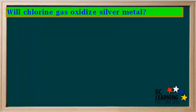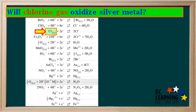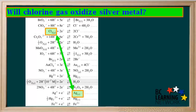Here's another question: Will chlorine gas oxidize silver metal? Chlorine gas, Cl2, is found on the left side of the table, and silver metal, Ag solid, is found on the right side. Cl2 will oxidize anything below it on the right, and Ag solid is below it on the right. The diagonal drawn between Cl2 and Ag is a backslash, so yes, this reaction is spontaneous — chlorine gas will spontaneously oxidize silver metal.